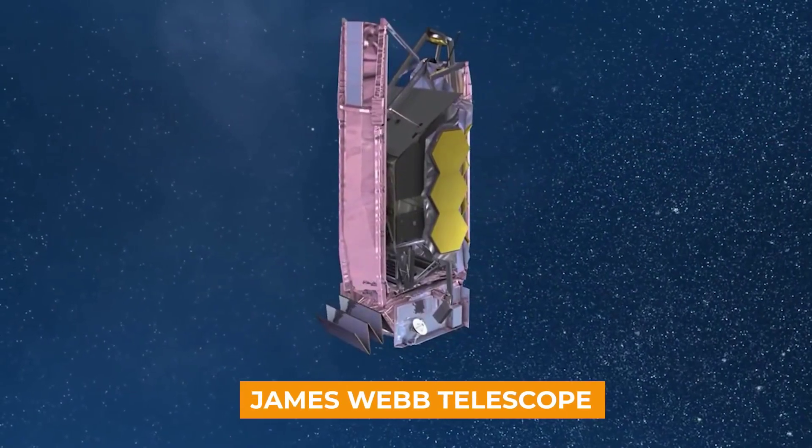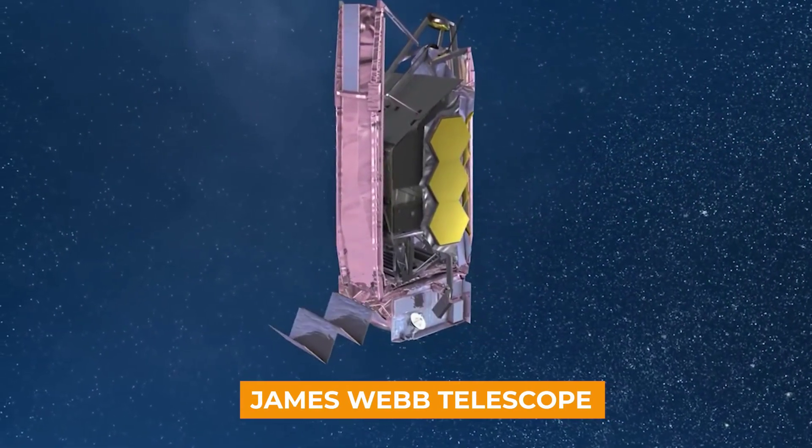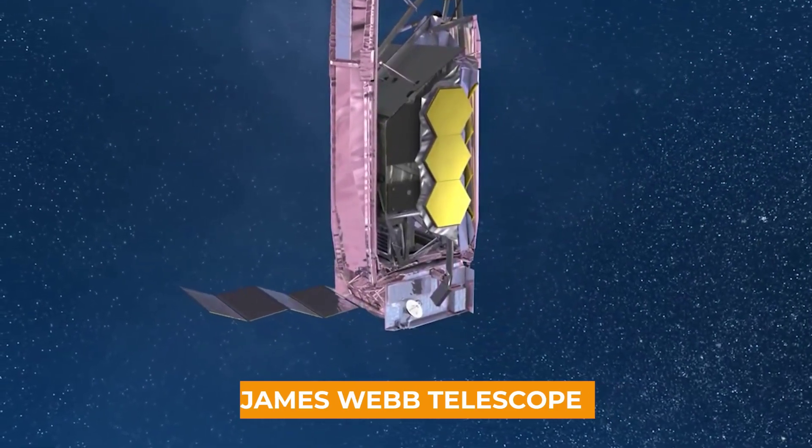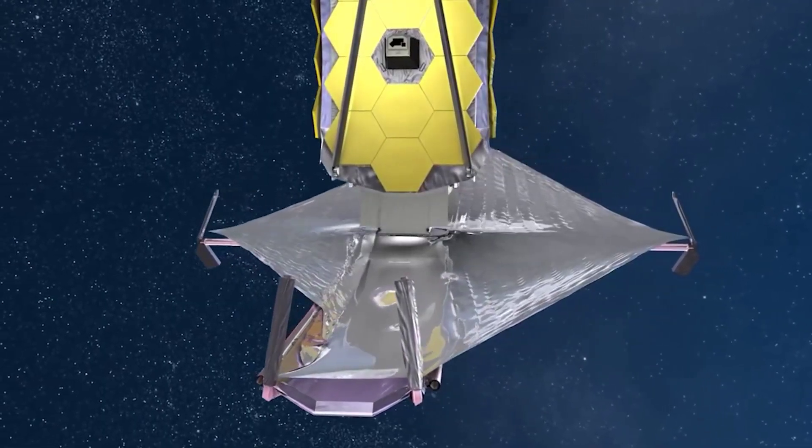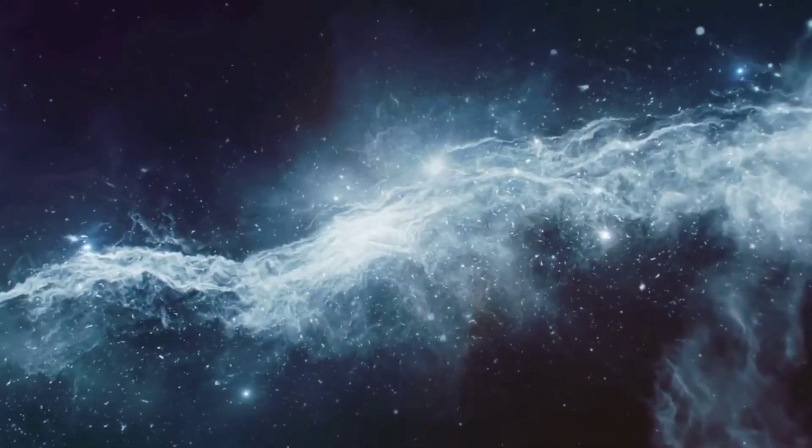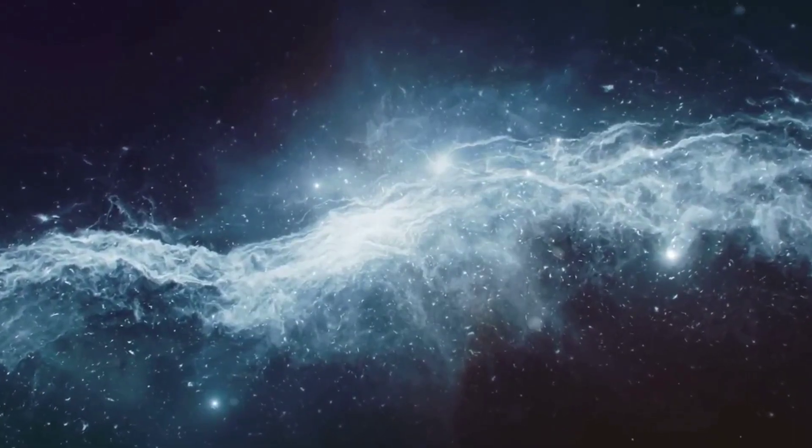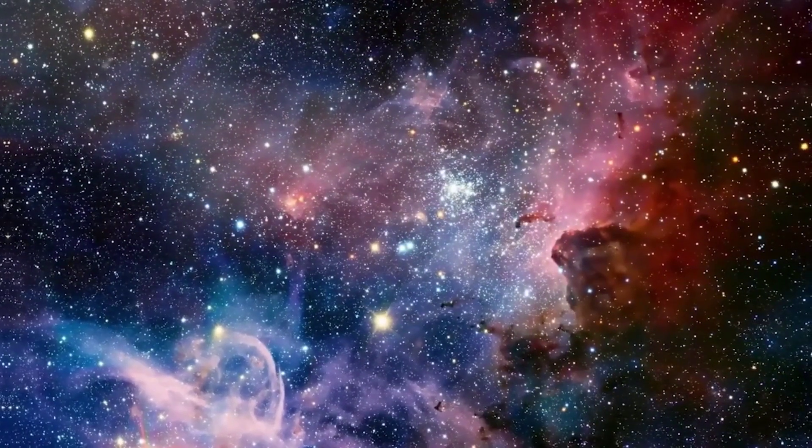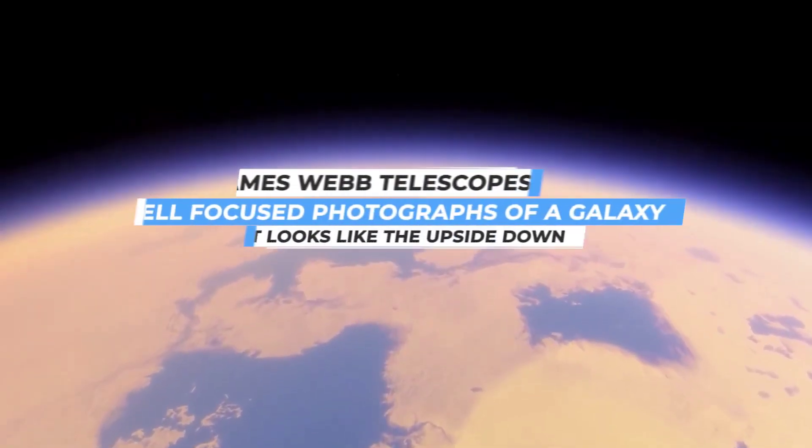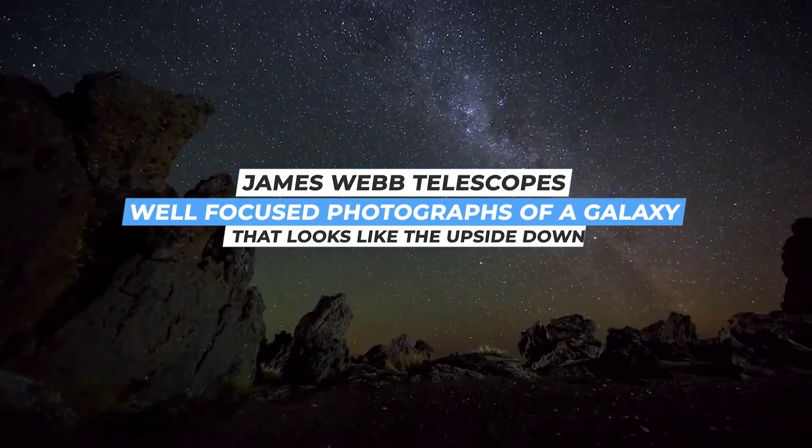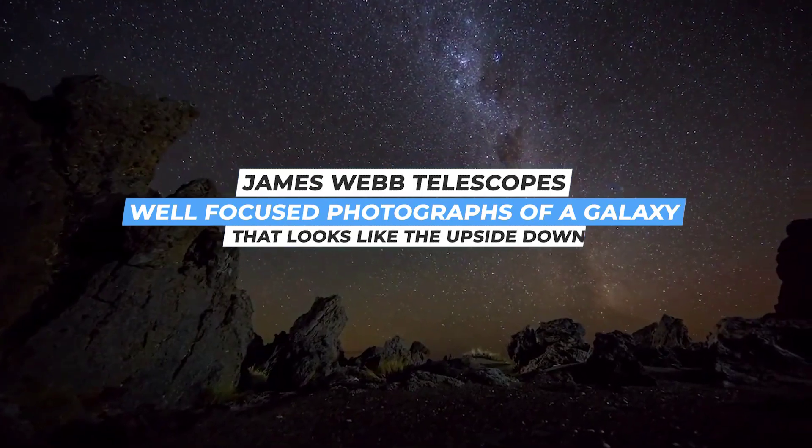The James Webb Telescope, the most current of these telescopes, is expected to uncover some groundbreaking discoveries in space and has already generated headlines. The discovery of a galaxy that looks like the Upside Down is one of them. This is a huge breakthrough, and in today's video, we'll talk about the James Webb Telescope's well-focused photographs of a galaxy that looks like the Upside Down.